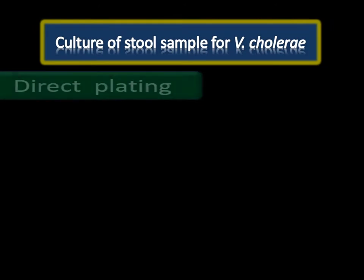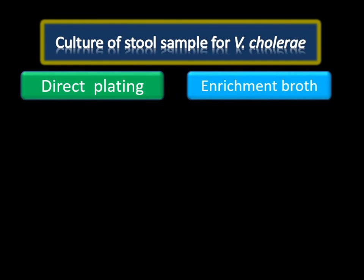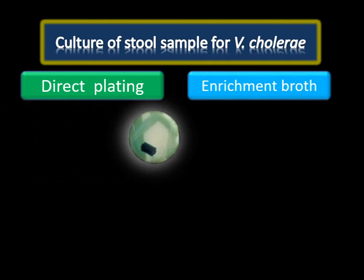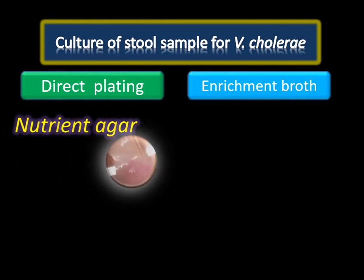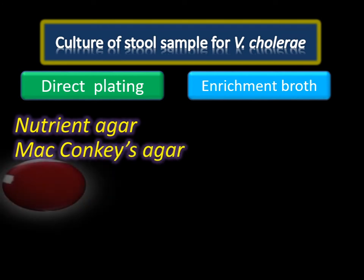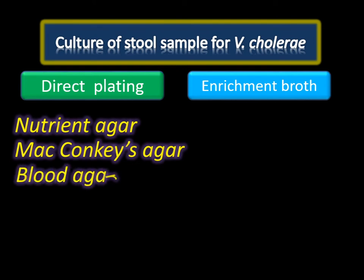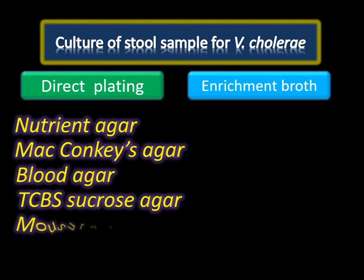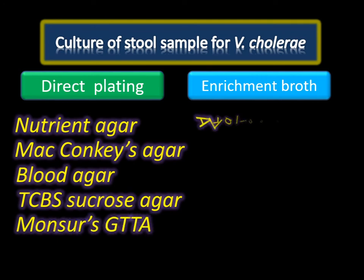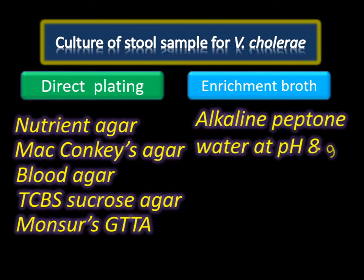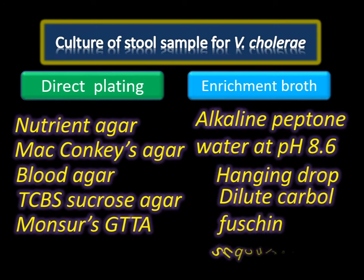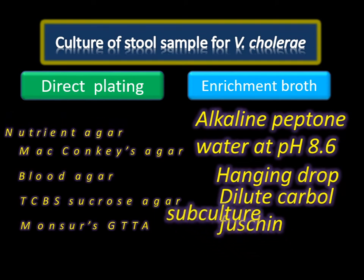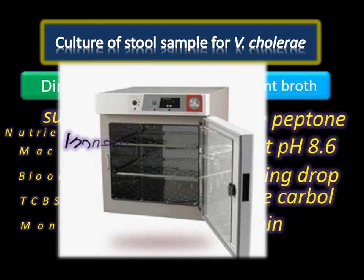Culture for stool samples of Vibrio cholerae is done by two ways: direct plating and enrichment broth. Direct plating uses nutrient agar. Enrichment broth includes alkaline peptone water at pH 8.6, incubated at 37°C for 4 to 6 hours. Then hanging drop preparations are made, dilute carbolfuchsin is added, and subculture is done by the same methods. Plates are incubated at 37°C and identification of suspected colonies is performed.